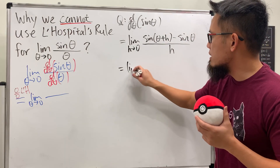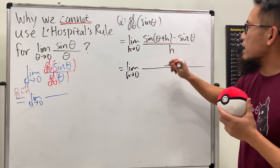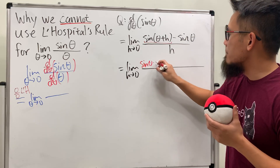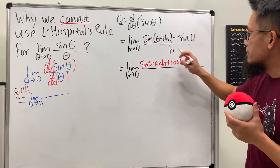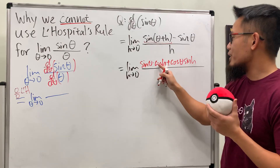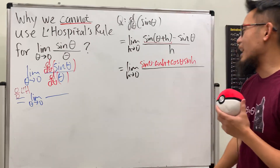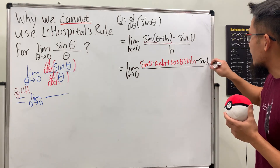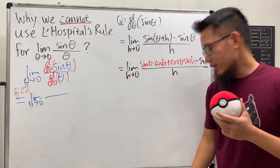The limit as h approaching zero: sine of two things adding inside becomes sine of the first times cosine of the second, plus cosine of the first times sine of the second. So we get sine(θ)·cos(h) plus cos(θ)·sin(h). Don't get mixed up with hyperbolic functions here. Then we have minus sine(θ) at the end, all divided by h.